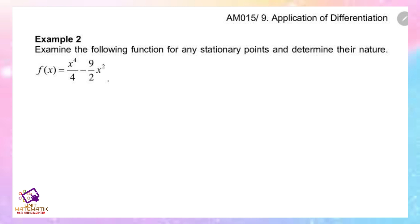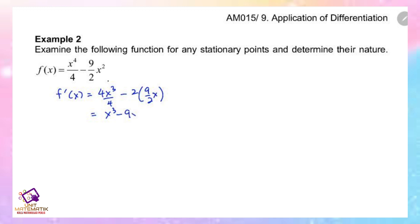First, we find the derivative of the function. f prime x equals 4x cubed over 4 minus 2 times 9 over 2 times x. Simplifying, we get x cubed minus 9x.